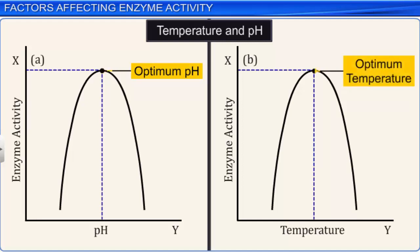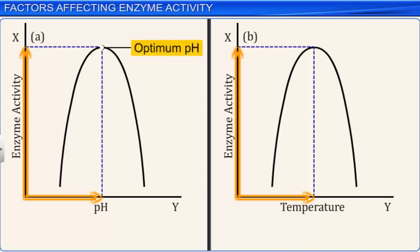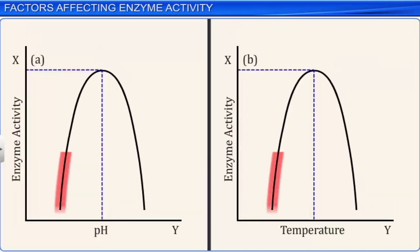These following graphs depict the impact of change in pH and temperature on enzyme activity. As shown by the graphs, enzyme activity increases steadily with an increase in pH and temperature up to the optimum pH and optimum temperature. Enzyme activity is the highest at this point. Thereafter, with an increase in pH and temperature, enzyme activity decreases as they get denatured and are not available for catalyzing reactions. Notice that enzyme activity is also low below the optimum value.